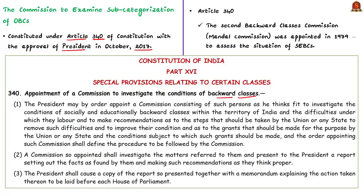Under Article 340, the President may appoint a commission to investigate the conditions of socially and educationally backward classes and also to recommend the steps to improve their condition. The report of this commission is to be placed before Parliament along with an action taken memorandum. Under this article, in 1979, the second backward classes commission was appointed, famously called the Mandal Commission.